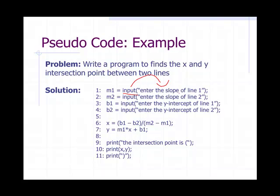So you ask the end of the slope of line one and that's saved into variable m1. Then you ask the end of the y-intercept of line two and that's saved into variable m2. Then you ask the end of the y-intercept of line one and that's saved into variable b1. And then you ask the end of the y-intercept of line two and that's saved into b2.